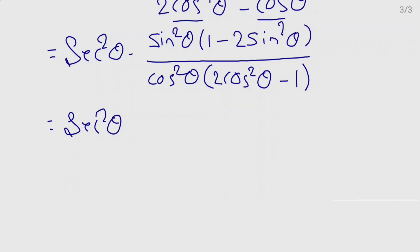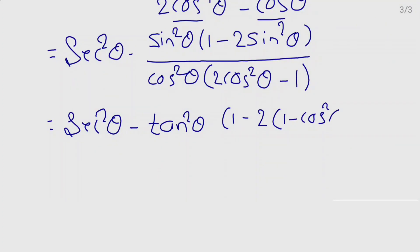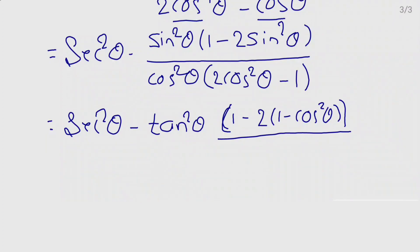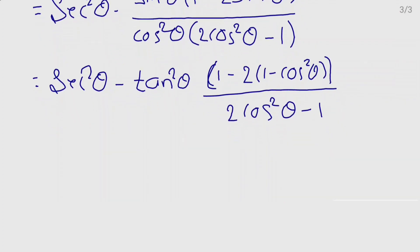Now sec²θ as it is, minus sin²θ divided by cos²θ we can write as tan²θ. And 1 minus 2sin²θ — we can write sin²θ as 1 minus cos²θ using the identity sin²θ plus cos²θ equals 1. This divided by 2cos²θ minus 1 as it is.